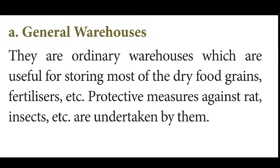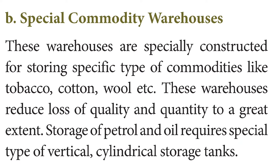On the basis of commodity stored, the first type is the general warehouse. General products are those which won't deteriorate due to climate or keeping them for a long period of time. These dry, rational products stored in a general warehouse include dry foods, grains, fertilizers, and consumer products. You just need to safeguard them from insects, rats, or pests.